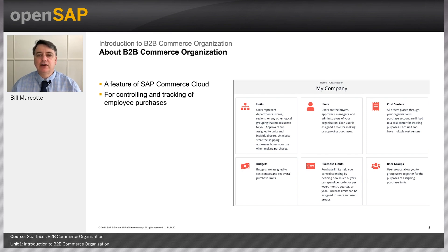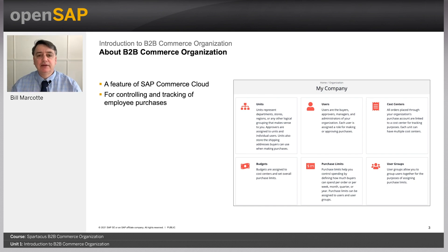All these concepts will be explained during this course. One easy example: a hospital network might have a lead buying administrator who sets up an organization representing nurses, doctors, orderlies — people that work at the hospital. They have an account with a seller company that sells uniforms, and each of these people from the hospital network can log in and make purchases on the seller's website.